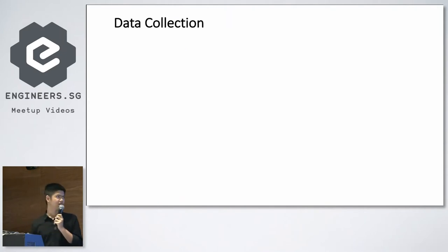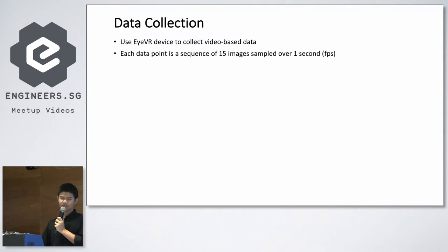For data collection, I couldn't find any public data that satisfied my requirements, so I created my own. I used the IVR headset device to collect video-based data. Each data point is a sequence of 15 images sampled over one second, so it's 15 FPS. It contains six labels and they're all balanced. I sampled from five different persons - 60% is from my eyes and the rest from my friends.